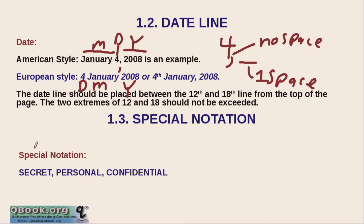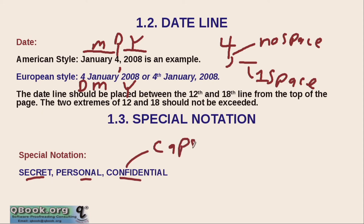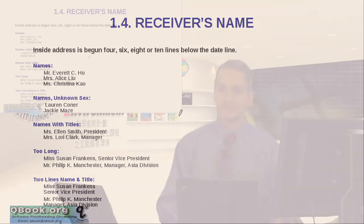The next part of the opening is a special notation. If something is secret, personal, or confidential, you write that there in all capital letters, to let the receiver know that something important is indicated.